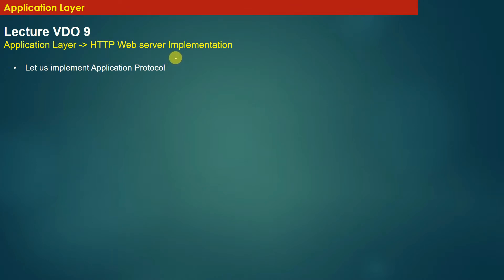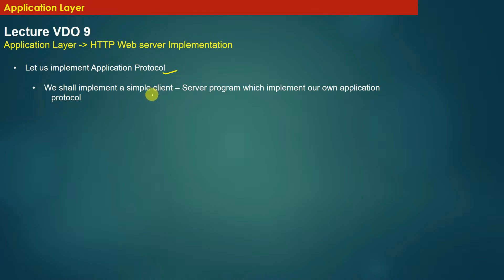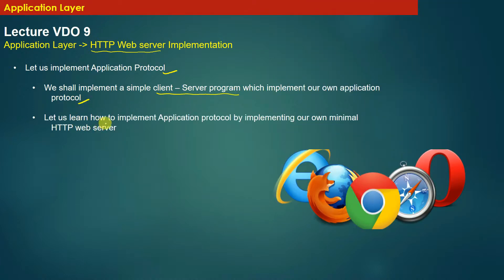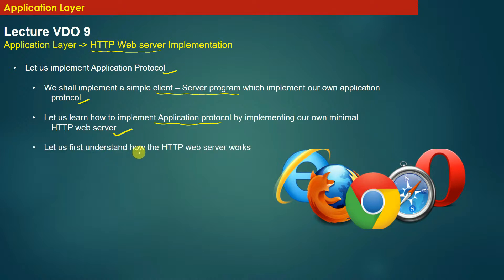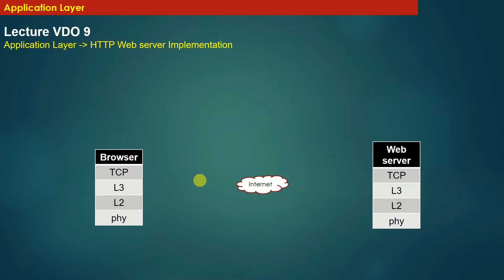Let us understand the concepts we have discussed so far by actually doing the implementation. We will implement our application protocol, which is nothing but our own HTTP web server. An HTTP web server is an application protocol, so we shall implement a simple client-server program. Let us learn how to implement an application protocol by implementing our own minimal HTTP web server.